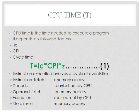Let's discuss how to compute the CPU time using these performance factors. CPU time is the time needed to execute a program. It depends on the following factors: first, instruction count IC; second, CPI, cycles per instruction; and third, cycle time. So T can be represented as IC × CPI × TOR.